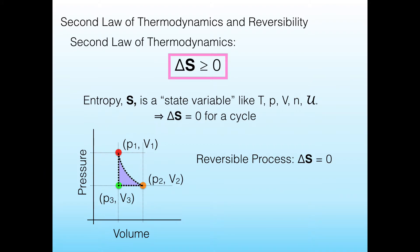We can also talk about reversible processes. These are processes for which delta S equals zero. In fact, any system on our PV diagram, which is a cycle, has delta S equal to zero.